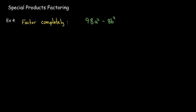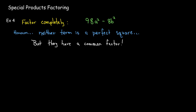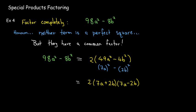Here I have only two terms: 98a² - 8b². There is subtraction, but neither of these terms is a perfect square. However, there is a common factor, a common factor of 2. So after I take out the common factor of 2, what I have left inside the parentheses is indeed the difference of two squares. And so I have to keep the common factor of 2, but then I can write the factorization as 2(7a + 2b)(7a - 2b).